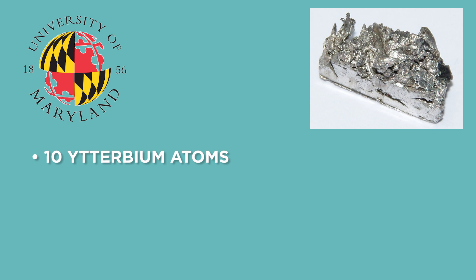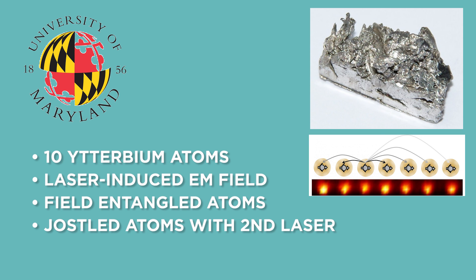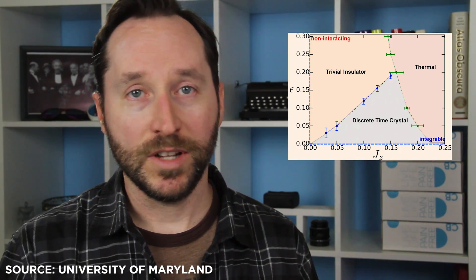The idea has been tantalizing enough that teams of researchers have been working on this for the last few years. And just recently, two different teams have announced that they've been able to do it. The first team is from the University of Maryland. They took 10 ytterbium atoms and used a laser to create an electromagnetic field around the atoms, which entangled various atoms in repeating patterns, before blasting it with a second laser that jostled the atoms. And as predicted, once the energy was introduced into the system, it never stopped — and in fact, after a while, it started moving in an oscillating pattern that was not created by the laser in the first place.